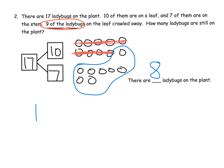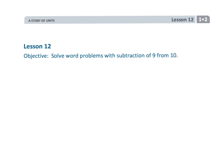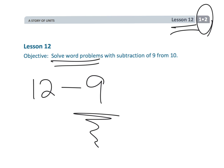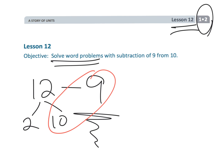You could write this as 17 minus 9 equals 8. Parents and teachers, notice we're not just starting with 17 and counting backwards 9. We're really trying to show a system and a strategy to allow our students to get the answer in a way that is more efficient and more meaningful than just memorizing subtraction facts. That wraps up first grade module 2, lesson 12, where we used word problems with subtraction by decomposing and subtracting from the 10.